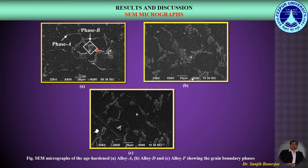From the quantitative analysis we can observe that the volume fraction of phase A — that is the CuAl₂ or theta phase — along the grain boundaries increased with increase in cadmium content up to 0.06 weight percent, that is at alloy D. This indicates that a cadmium content of 0.06 weight percent favored the precipitation reaction.